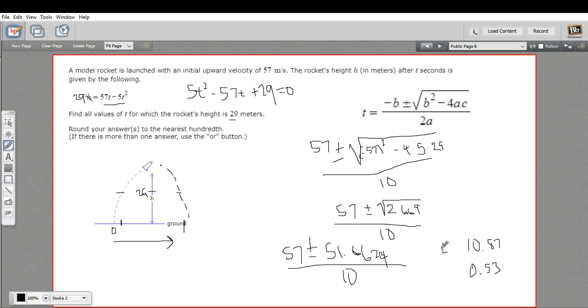So these are the times when this rocket passes through the height of 29 meters. And this is times in seconds. So that is how to solve a word problem involving a quadratic equation.